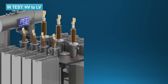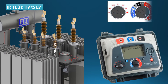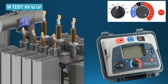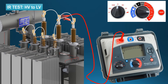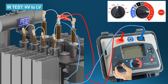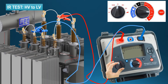IR test procedure, HV to LV. Polarization index PI to be measured at 5 kV, from which IR insulation resistance value will also be available. After 10 minutes.